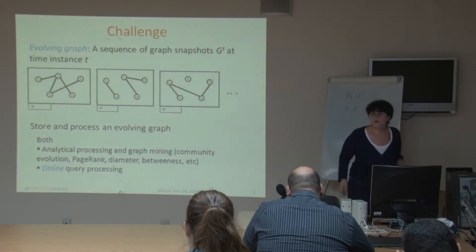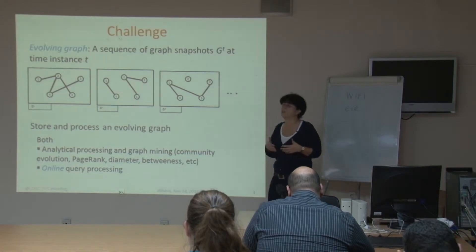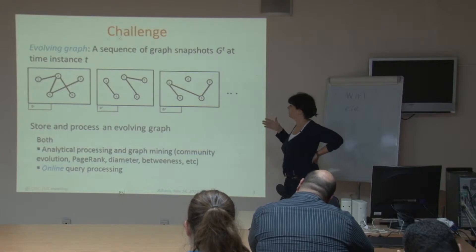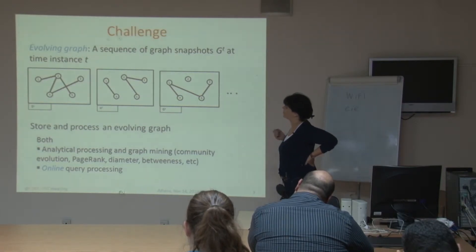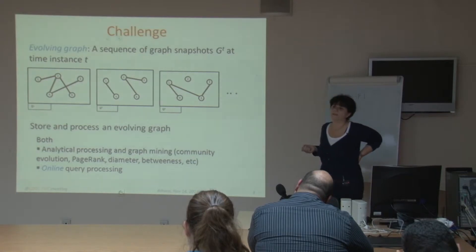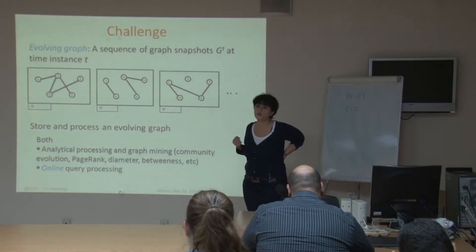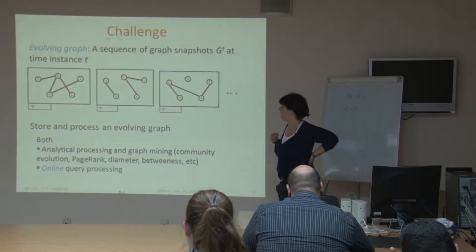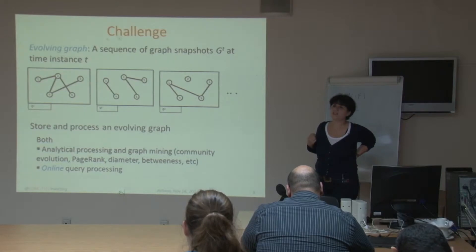We can model such evolving graphs as a sequence of graph snapshots. I have a toy example here — we have three graph snapshots, at time instances one, two, and three. The challenge is how to store and process such graph snapshots, and what type of queries to ask about these evolving graphs and how to process them.